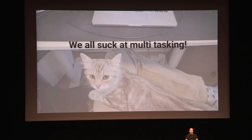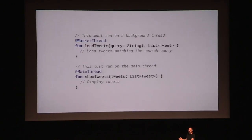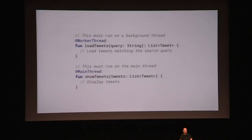We're going to look at this code, which I'll come back to during the whole talk. We have one function, load tweets, that needs to run in the background — it does an IO operation, so we can't run it on the main thread or it will crash. It returns a list of tweets. Then we have the method show tweets, which takes a result and displays it. This one needs to run on the UI thread because it modifies the UI. So they need to run on different threads.